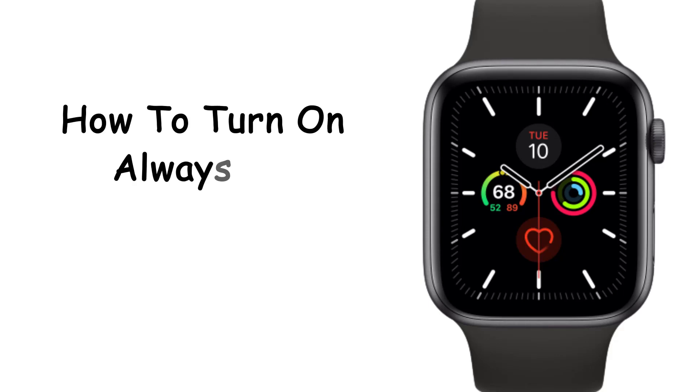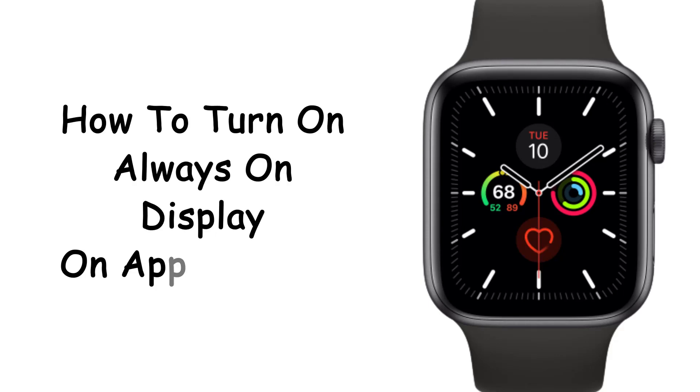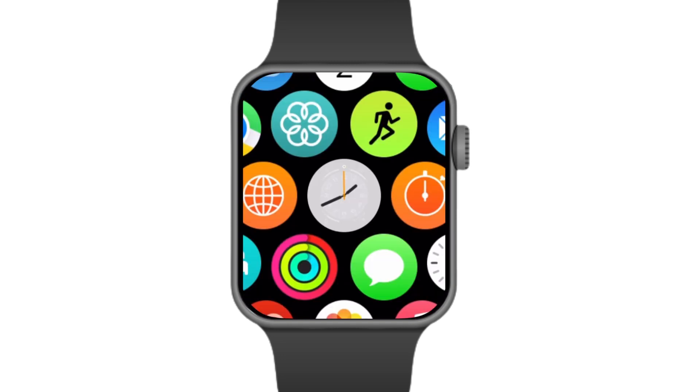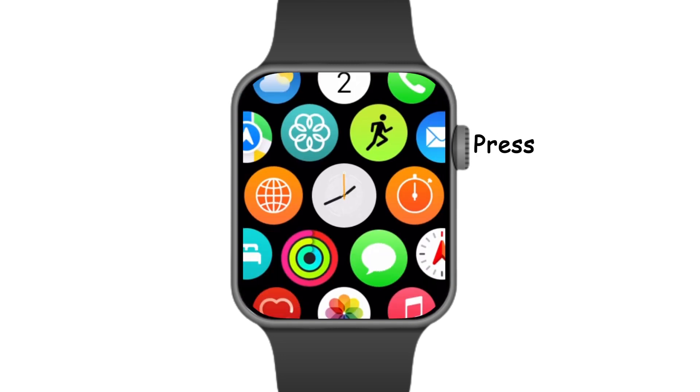How to turn on always on display on Apple Watch. Go to your app menu by clicking on the Digital Crown.